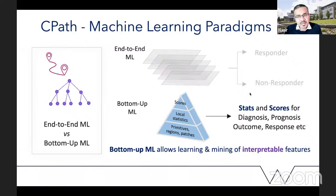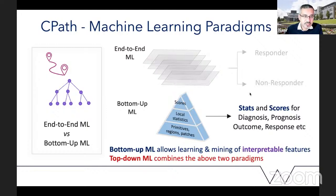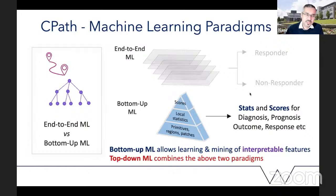The bottom-up approach allows learning and mining of interpretable features, which I think is quite powerful, especially as there is increasing focus on interpretable AI. There's also a third paradigm emerging — top-down machine learning — which starts by recognizing areas of interest from the top and then drills deeper using bottom-up machine learning. I'll go over some of the algorithms we've been developing following the bottom-up paradigm, as well as a few applications.